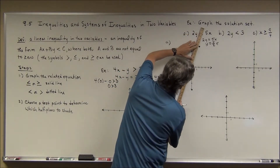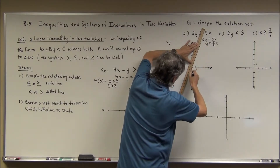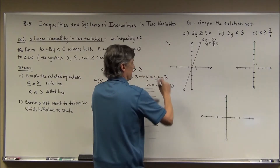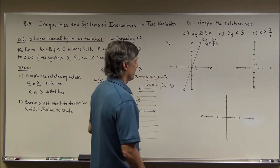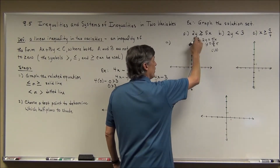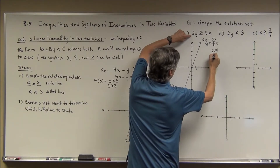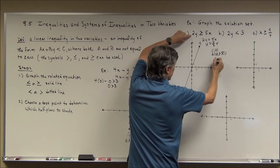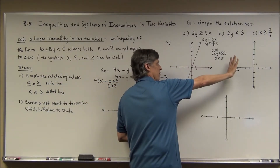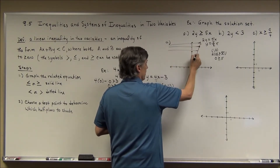I get a ruler and graph the solid boundary line. Then I pick (1, 0) as my test point, since it's not on the line. Substituting into the original: 2(0) is greater than or equal to 5(1) gives 0 ≥ 5, which is false. So (1, 0), on the right side of the line, makes it false. By process of elimination, I shade the other half plane — the left side.